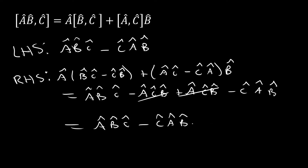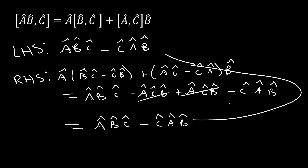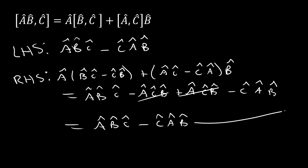We're left with A-hat·B-hat·C-hat minus C-hat·A-hat·B-hat, and we can see that these are equivalent to the left-hand side, so this identity is verified.